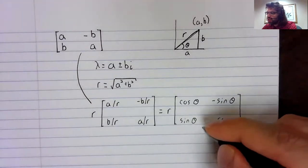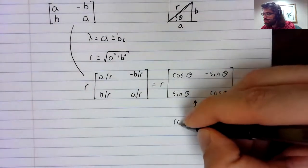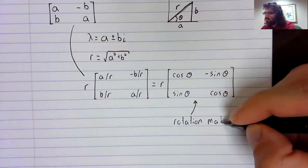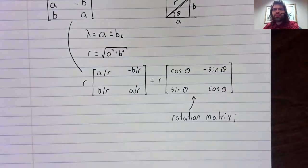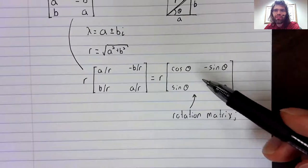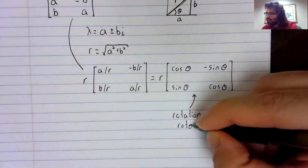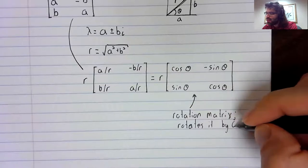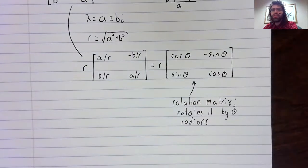This matrix we saw way back then is a rotation matrix, in the sense that multiplying a vector by this rotates it by theta radians in the plane.